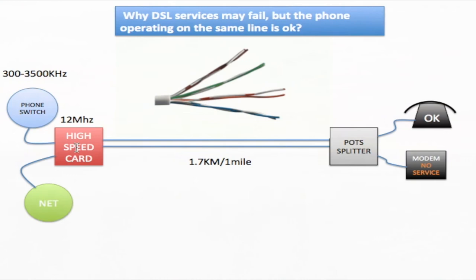This diagram has the phone switch, which the telephone service is coming from, connected to a high-speed card. The internet service is also connected to the same high-speed card. Both of these signals are multiplexed together and sent out across a copper twisted pair line — I drew it simplified here, but it represents the twisted pair.